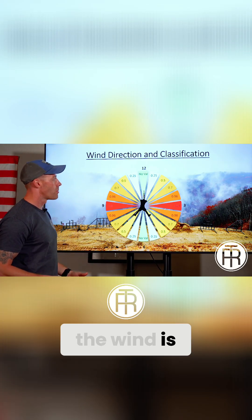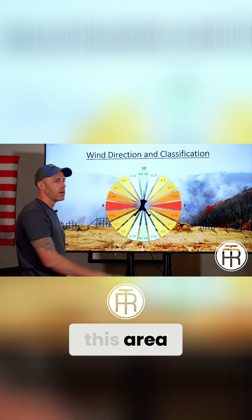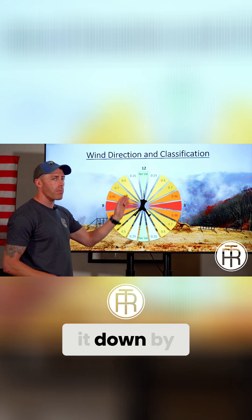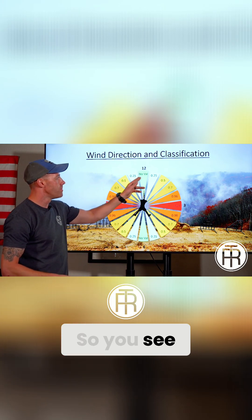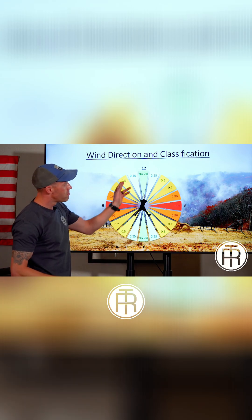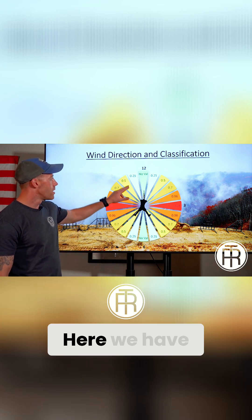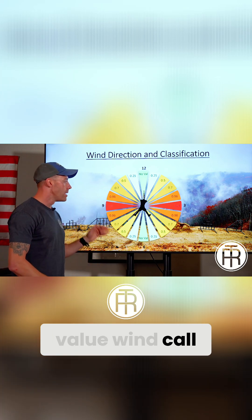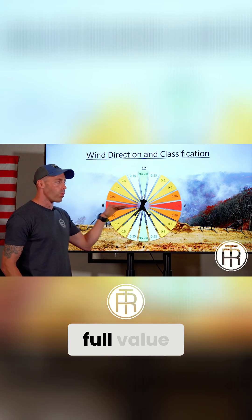We always say where the wind is coming from — meaning if it's coming from our front left, that would likely be somewhere in this area. But from there, we don't just say front left; we have to narrow it down by what is called a cosine, basically a number related to an angle. So at roughly 1 o'clock, or 11:30 to 1:30 somewhere in there, we have a cosine of roughly 0.25. Then we have a 0.5, a 0.7, a 0.96, and a full value wind call. And if the wind is coming from left to right and we're shooting at 12, this would be full value.